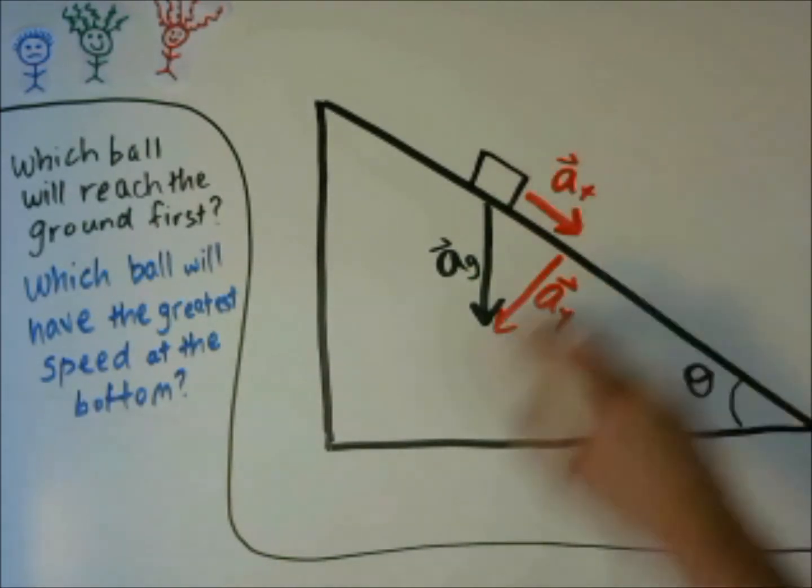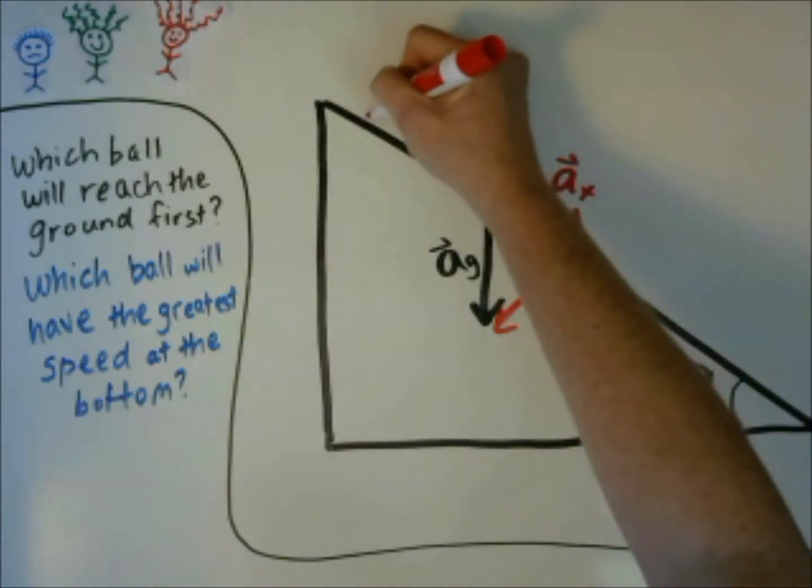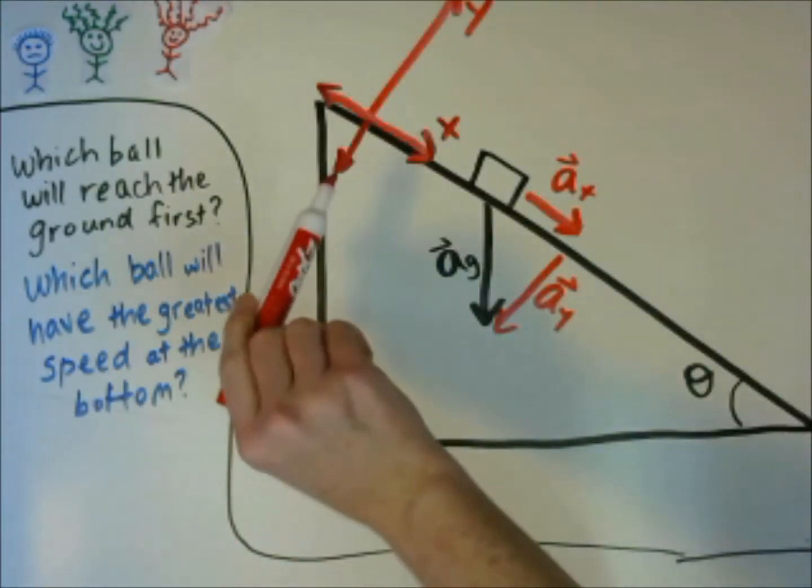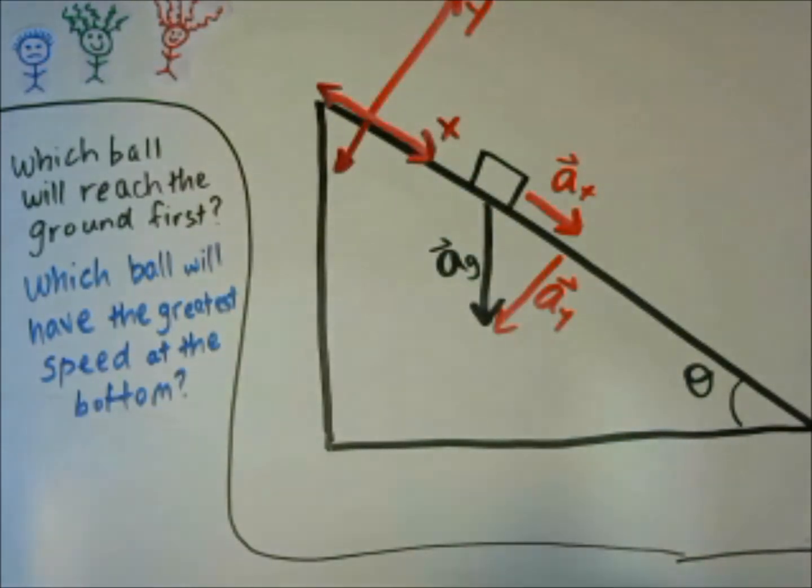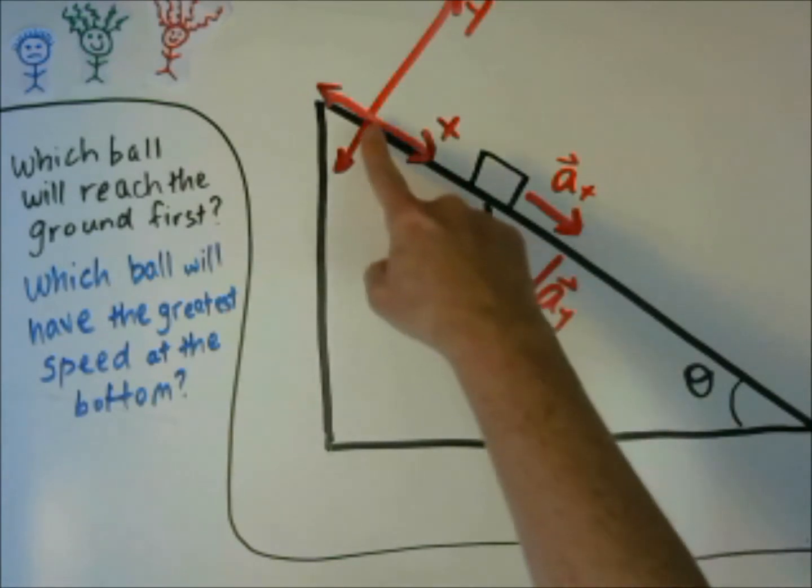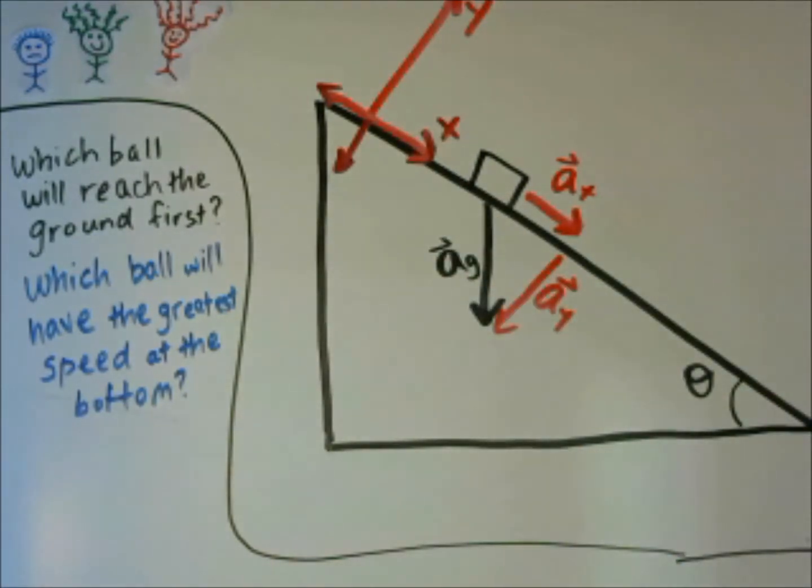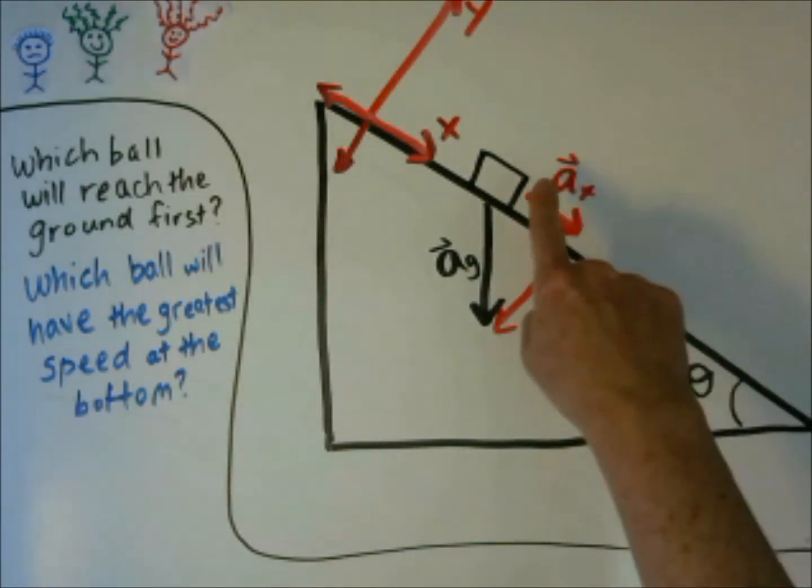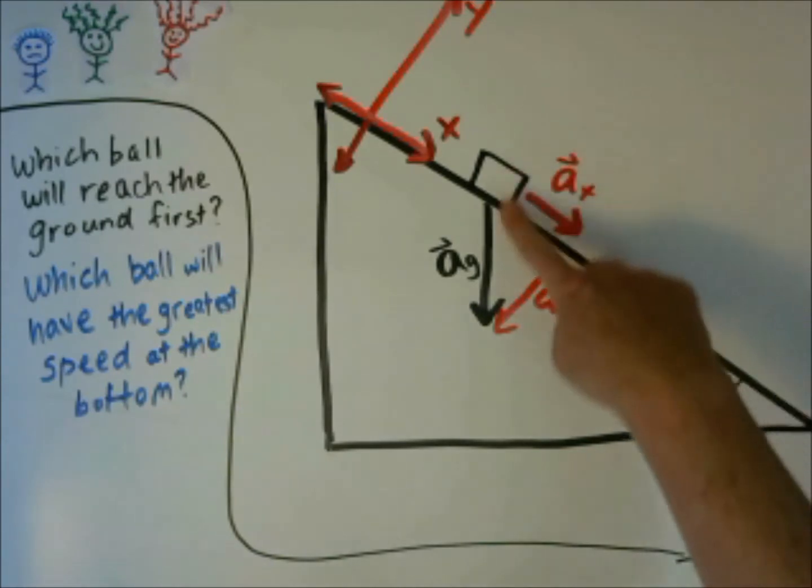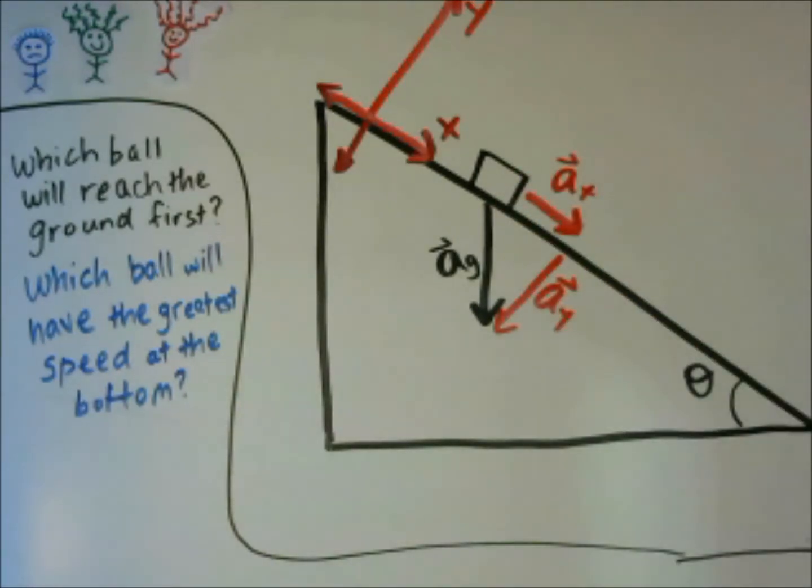The reason I'm calling this x and this y is we're defining our coordinate system so that perpendicular to the inclined plane is the y axis and parallel to the inclined plane is the x axis. That makes our calculations easier for any motion on an inclined plane. So what we need to find is what is a_x, the acceleration in the x direction.